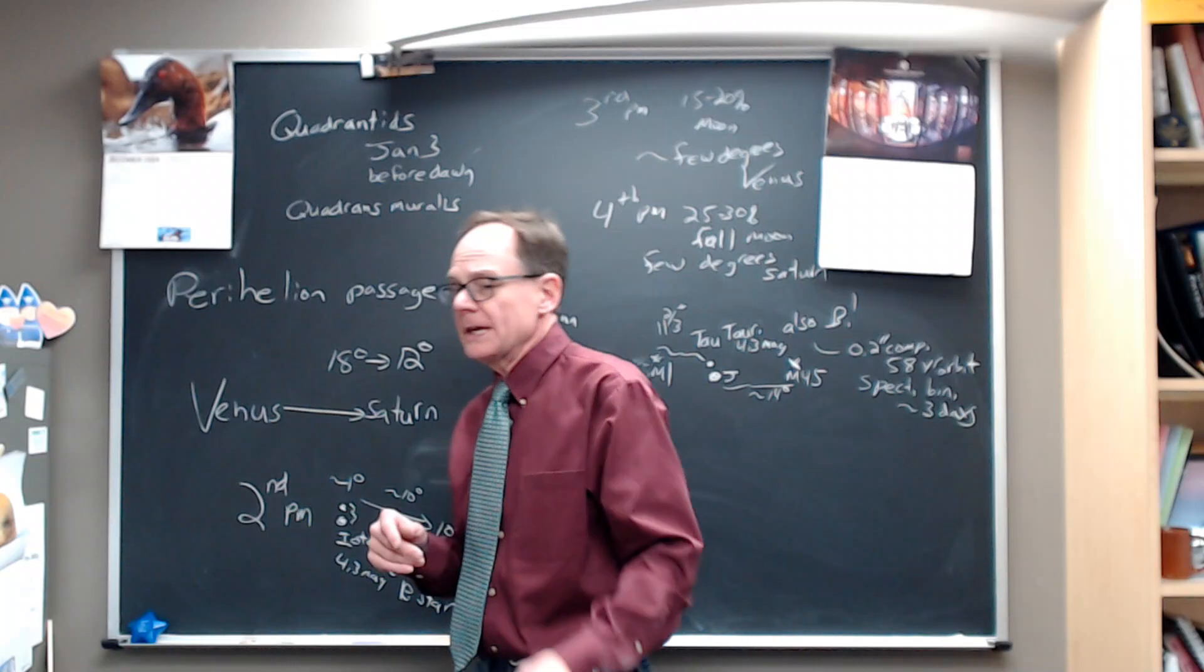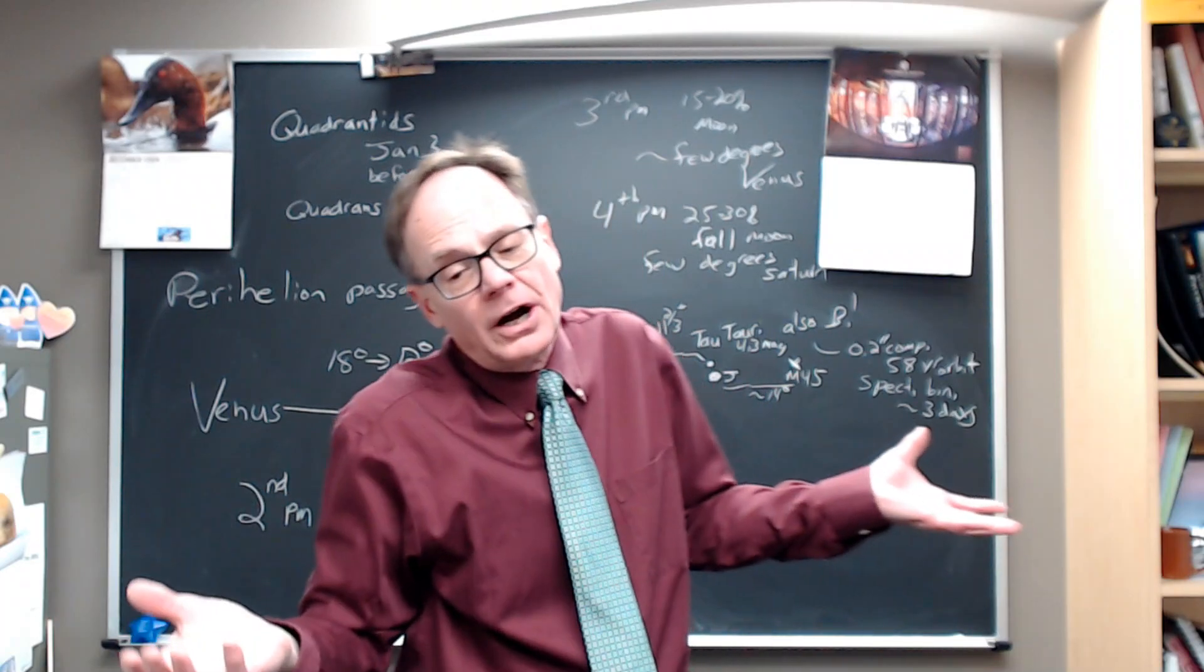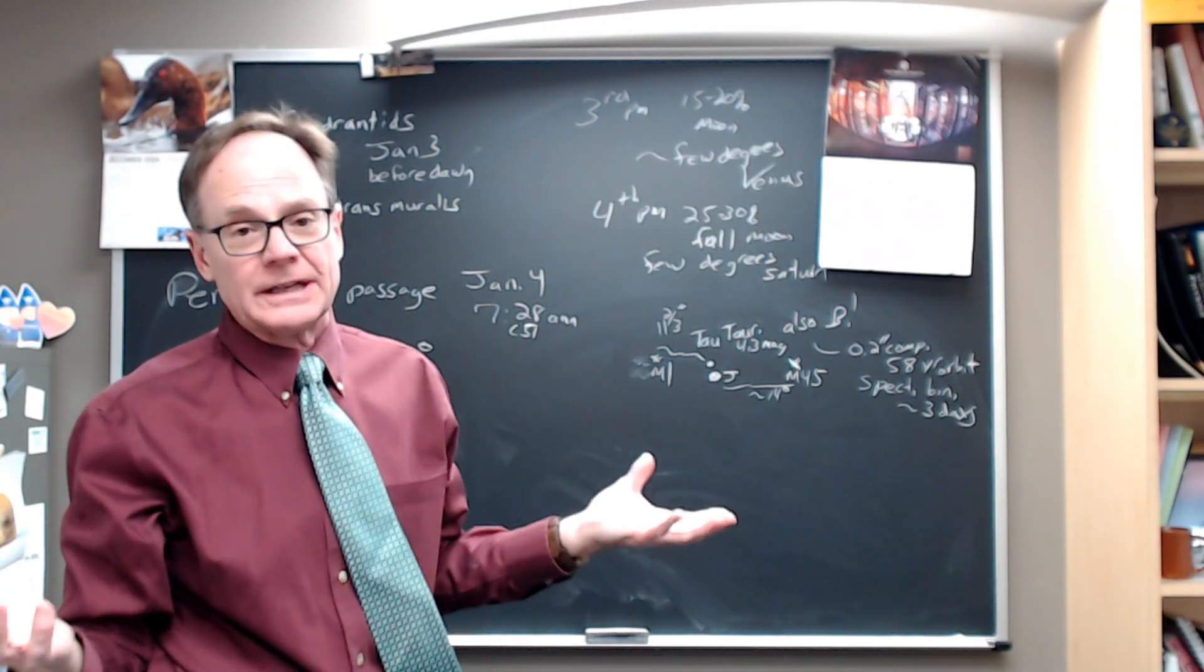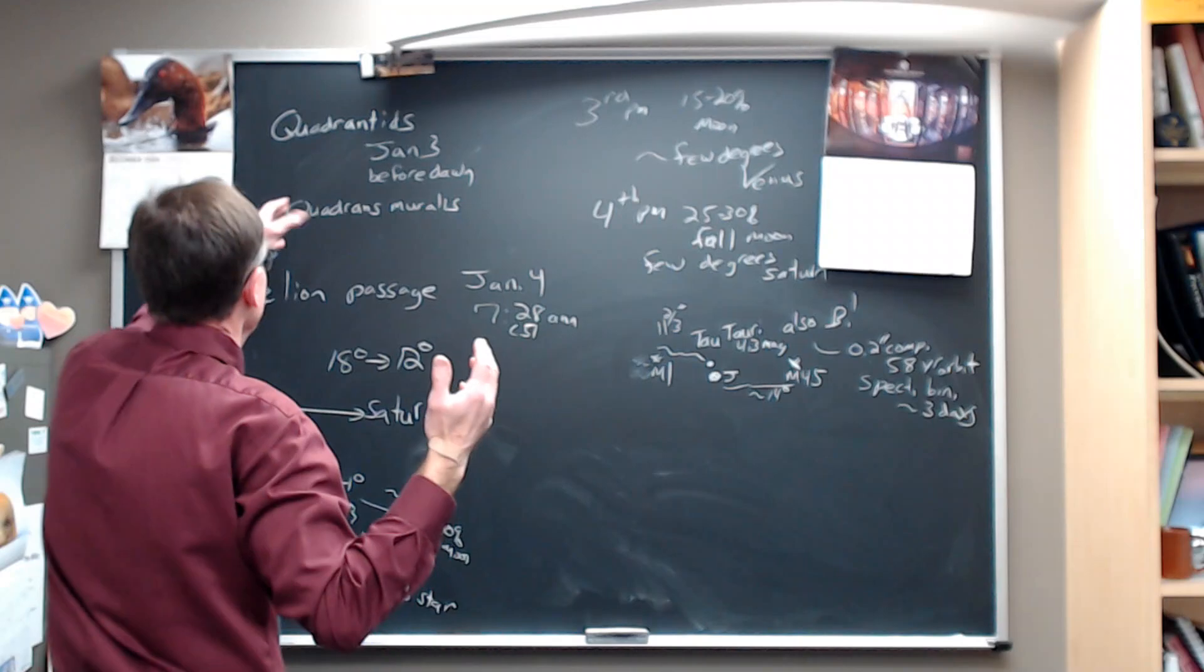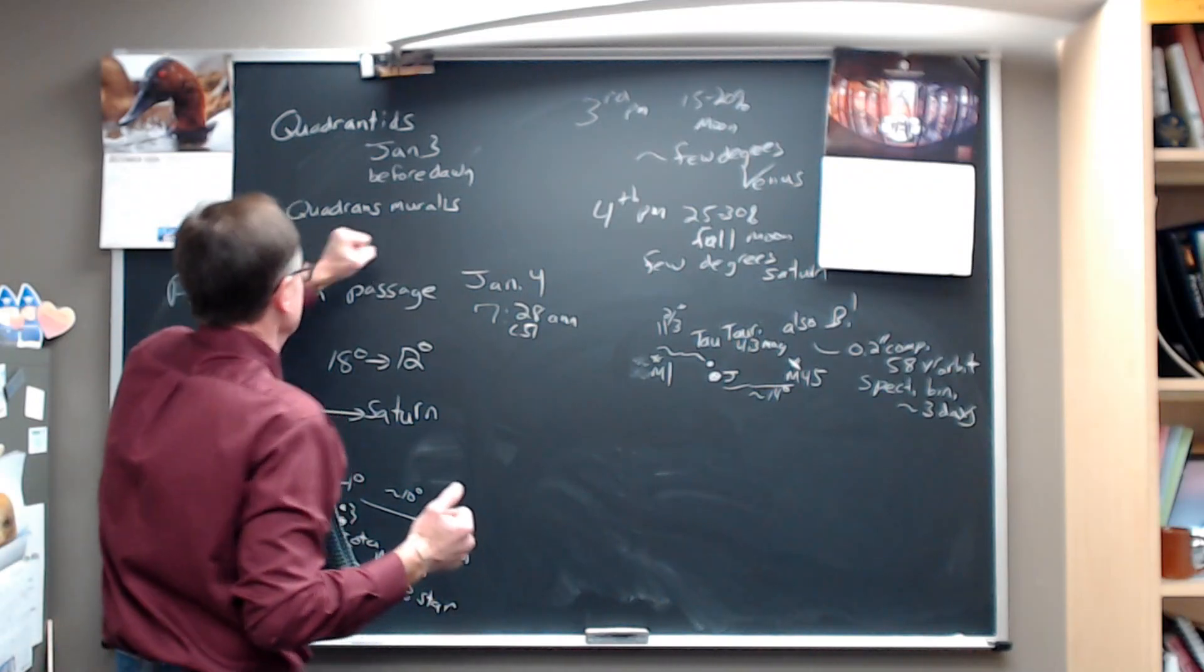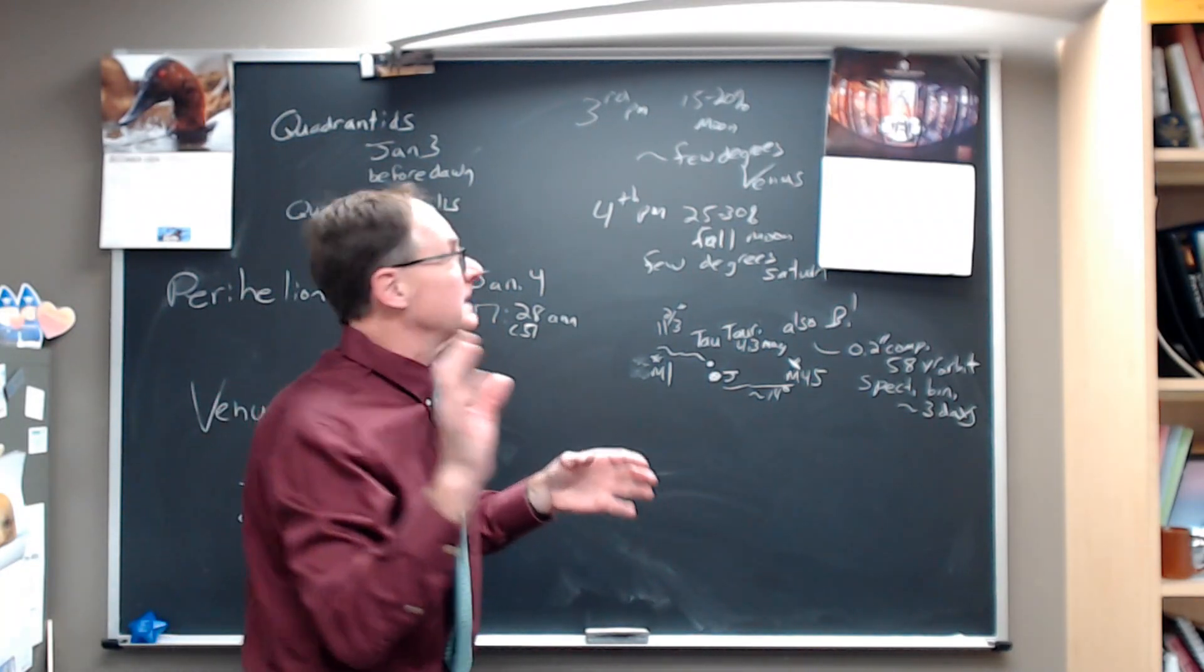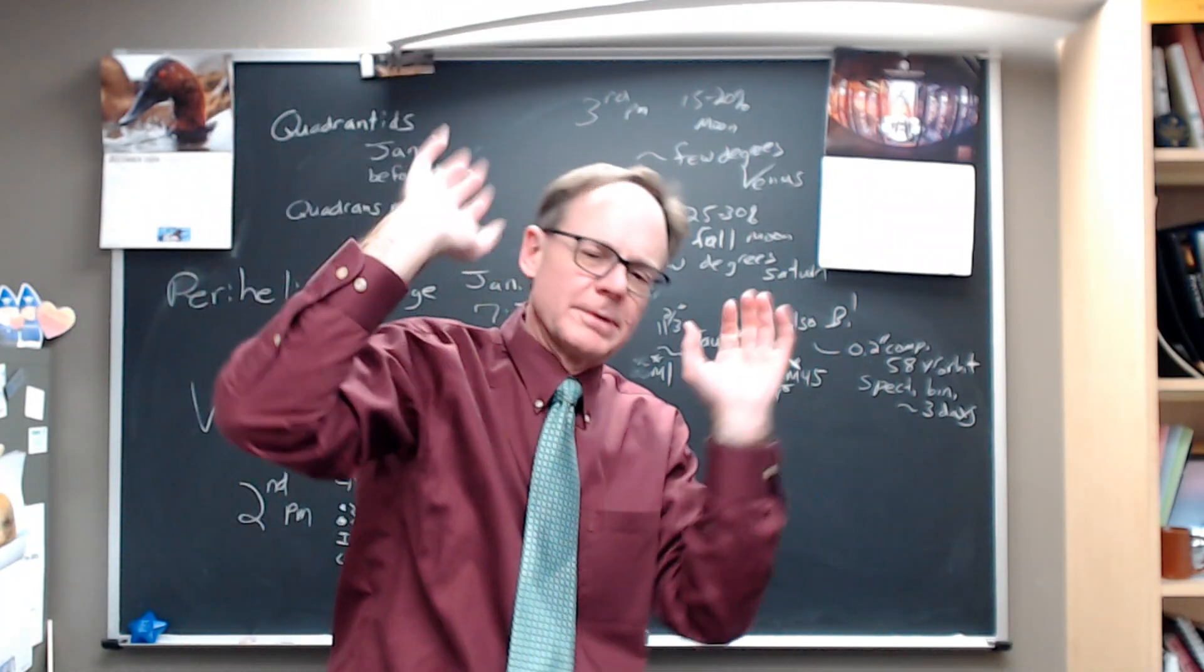Let's start with the Quadrantids meteor shower. The Quadrantids are named for the constellation where the radiant lies, where the meteors seem to come from that point. And you're thinking, well, I don't know what Quadrant. We don't use that constellation much anymore. Quadrans Murales is the home of the radiant of this meteor shower. The radiant lies above Hercules, near Draco, toward the Big Dipper, so looking north, basically.